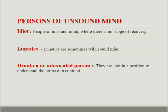Three categories of persons are of unsound mind: an idiot is a person of unsound mind where there is no scope of recovery; a person who is sometimes of sound mind may also fall into this category; and a drunken or intoxicated person is not in a position to understand the terms of a contract and so is also considered a person of unsound mind.